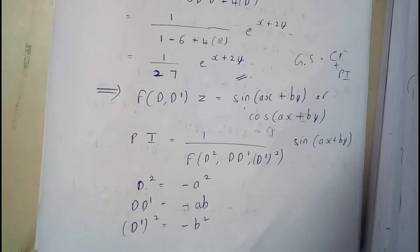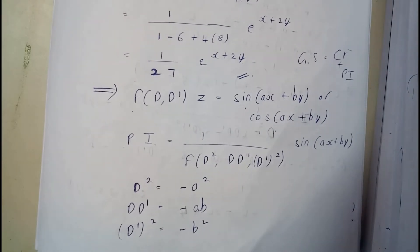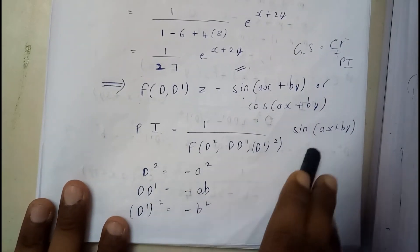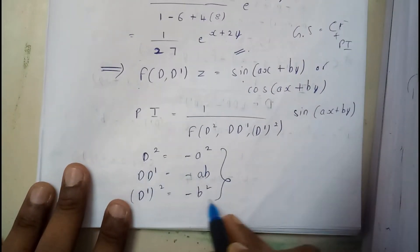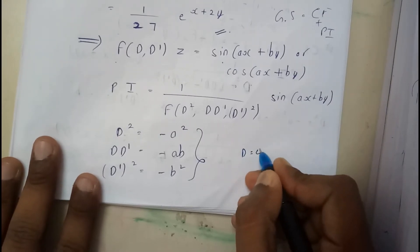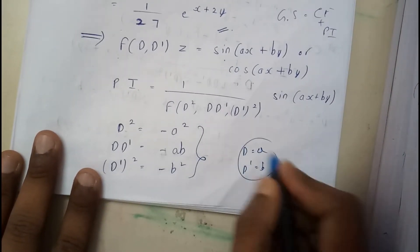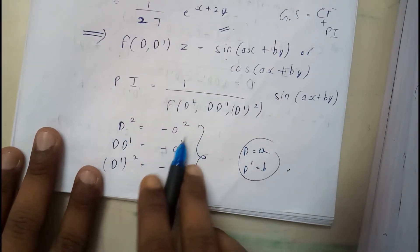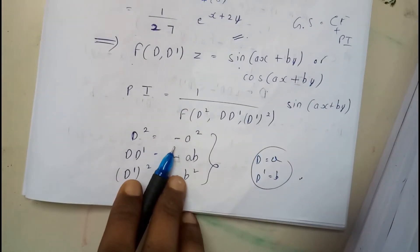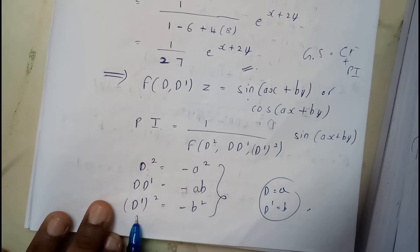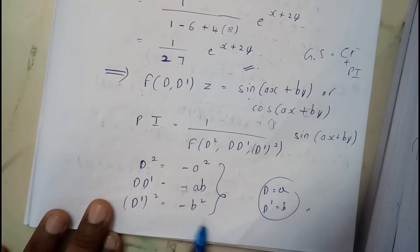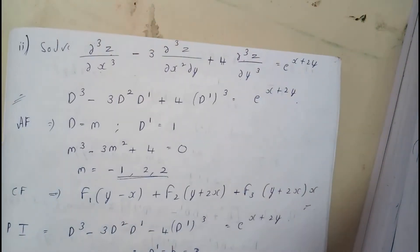The particular integral is one divided by the given expression into the sine or cosine term, depending on the given question. The important formulas here are: D² equals minus a², DD' equals minus ab, and D'² equals minus b². I hope everyone is now clear with these three formulas.